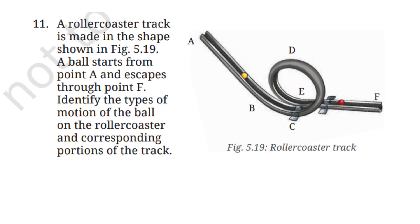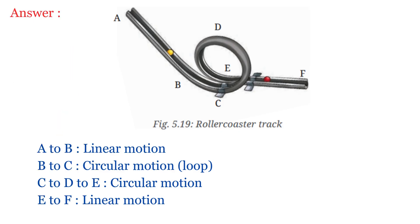Question No. 11: A roller coaster track is made in the shape shown in figure 5.19. A ball starts from point A and escapes through point F. Identify the types of motion of the ball on the roller coaster and corresponding portions of the track. So according to the roller coaster track shown, the ball undergoes linear motion from point A to B. Then it shows circular motion from point B to C as it moves through the loop. From point C to D and D to E, the ball continues in circular motion along the curved track. And finally, from point E to F, the ball again exhibits linear motion.